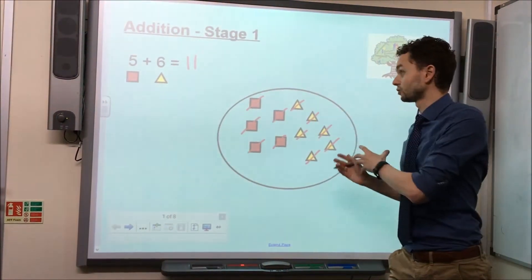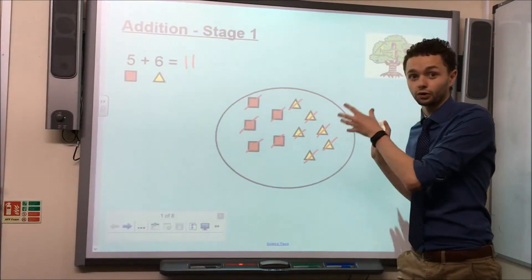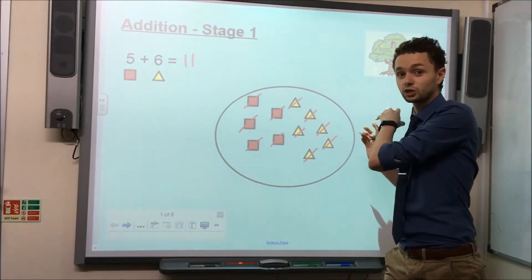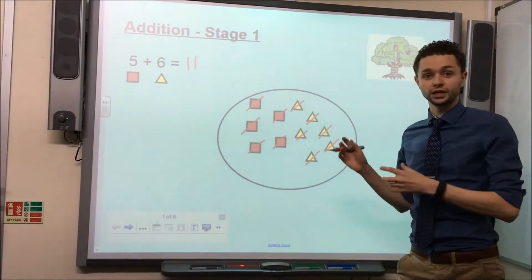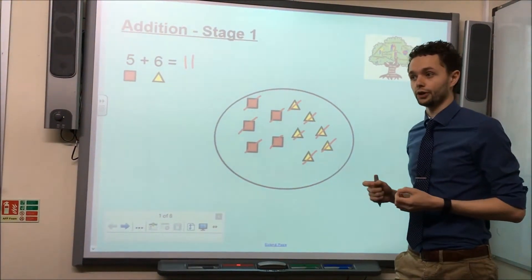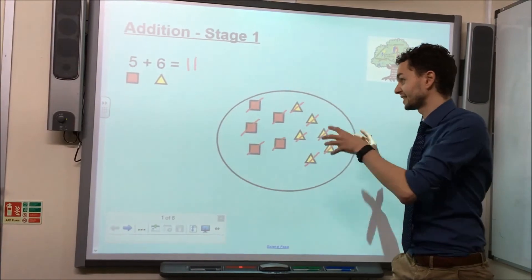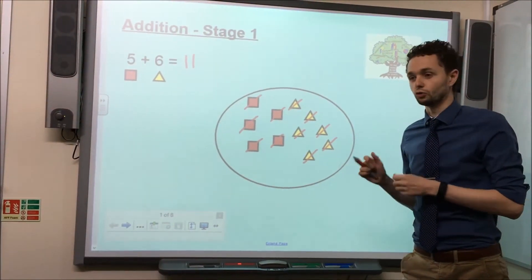Now I've used squares and triangles just because that's the best thing to do on a whiteboard, but you guys can use absolutely anything at home. Buttons, counters, coins, any object that the children can count to help them visualize and actually see what it means to be adding two numbers together.